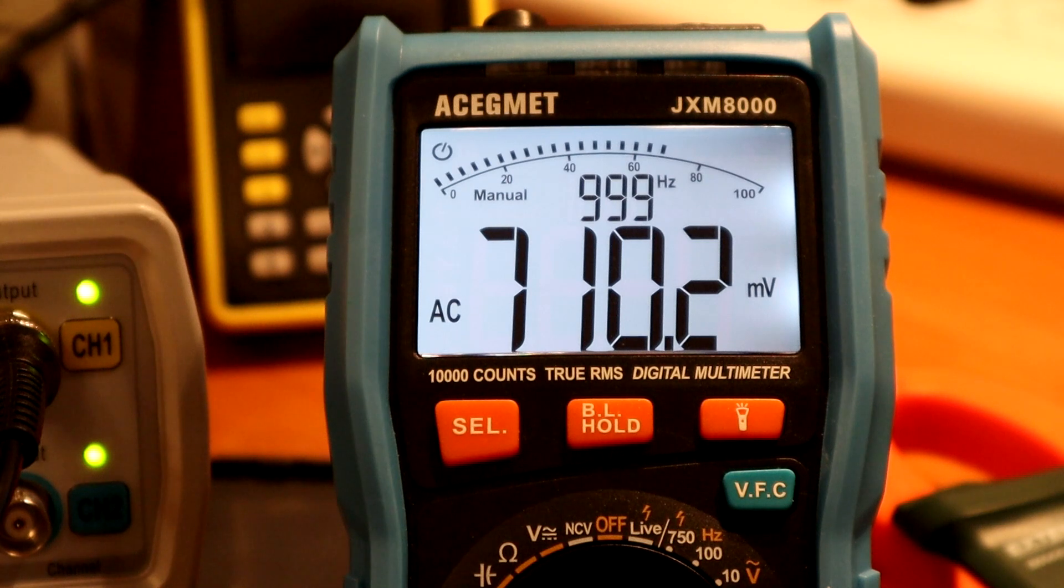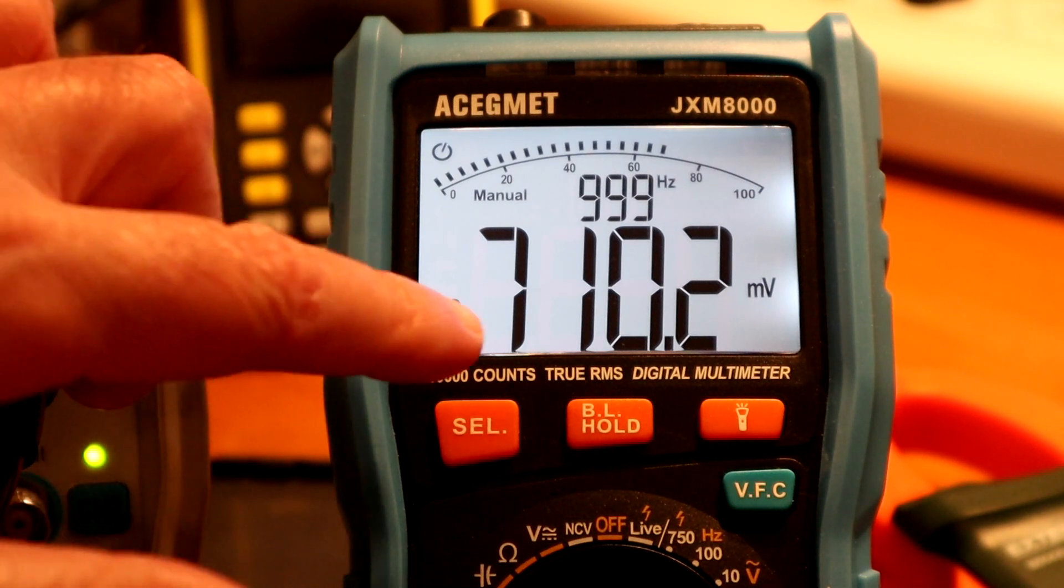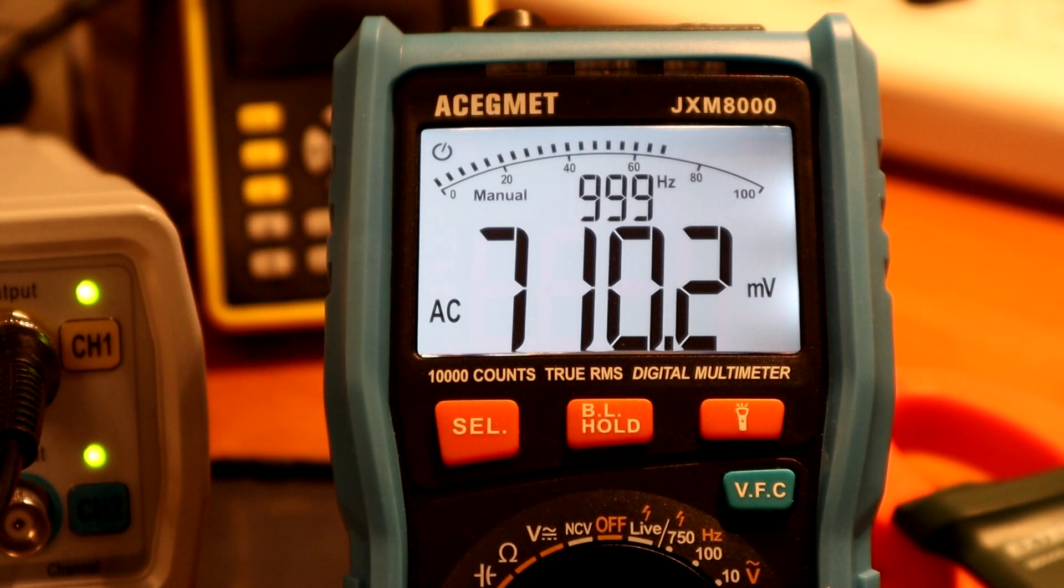So, why is it reading 710 millivolts? Well, that's because the ARB generator here puts out 2 volts peak to peak, which is 1 volt peak, which is 0.7071 volts RMS. This is pretty close to that, within a percent or so, which is the spec on this unit.